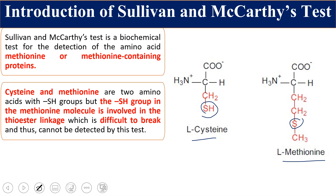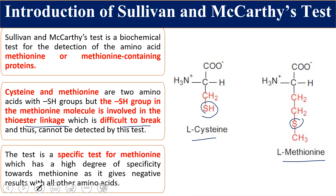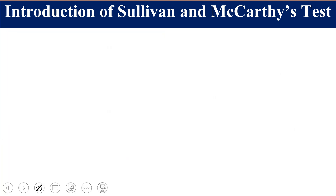So the nitroprusside test given by cysteine is not given by methionine, and this Sullivan and McCarty test given by methionine will not be given by cysteine. The SH group present in methionine is involved in the thioether linkage, which is difficult to break and was not detected by the nitroprusside test. This test is very specific for methionine and has a high degree of specificity, giving a negative result with all other 19 amino acids — only methionine gives a positive test.